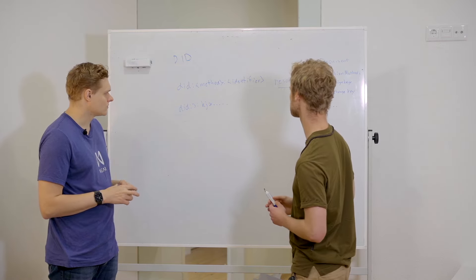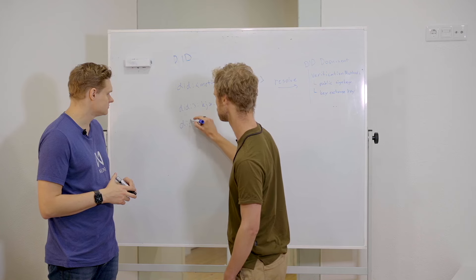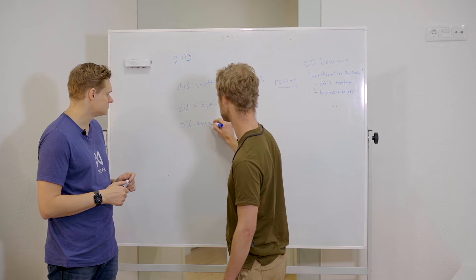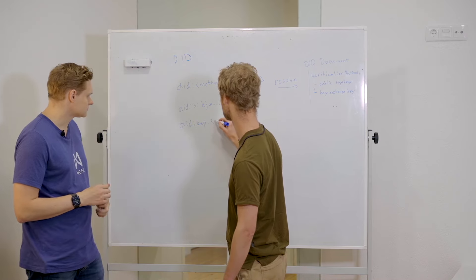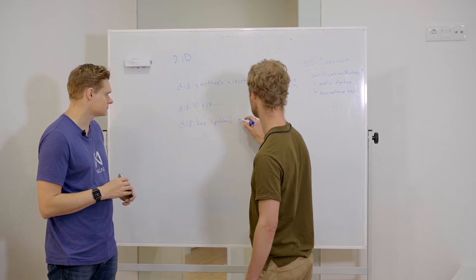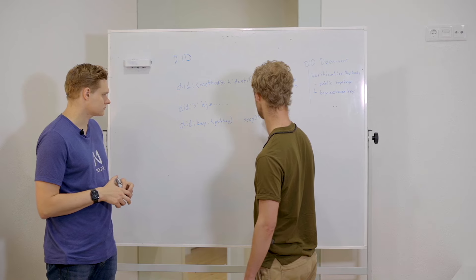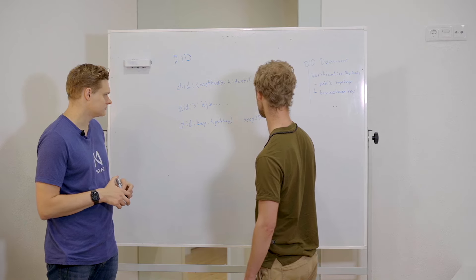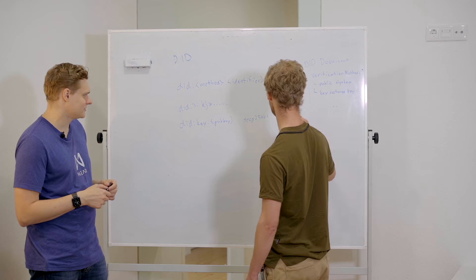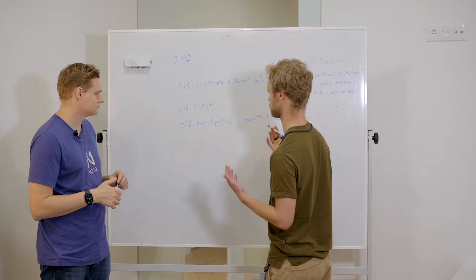There are also very simple DID methods like did:key, which just has a public key embedded directly in the identifier. This supports secp256k1, P-256 (r1), Ed25519, BLS, and most of the useful curves.